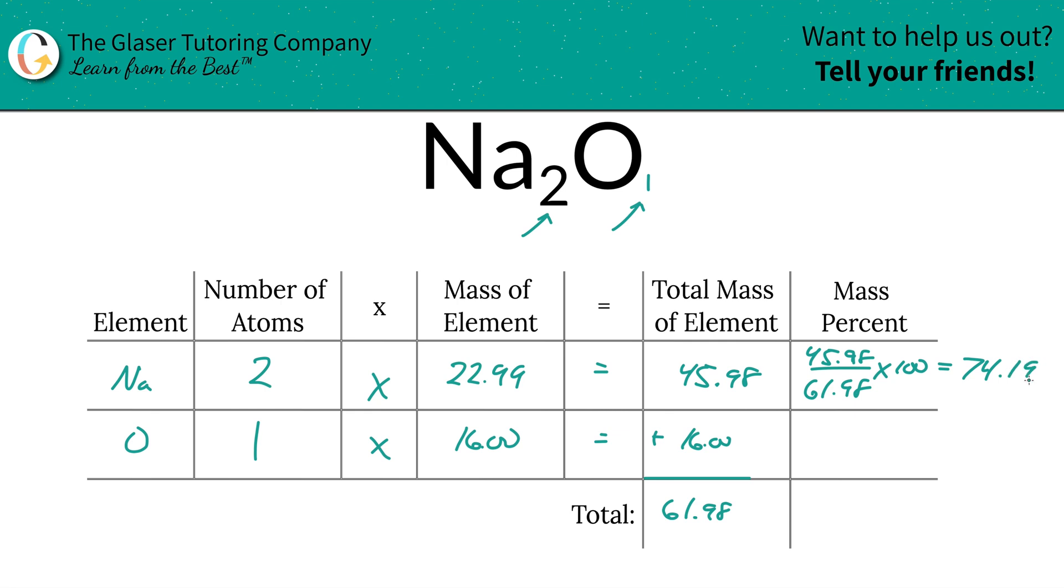So you only need to look at this column now when you're calculating the mass percent or the percent composition. This is then 74.19 percent. That's the percent for sodium. And then oxygen, you simply take the total mass of the oxygen, 16, divided by 61.98, multiply that by 100, and then you're simply going to find 25.81 percent.